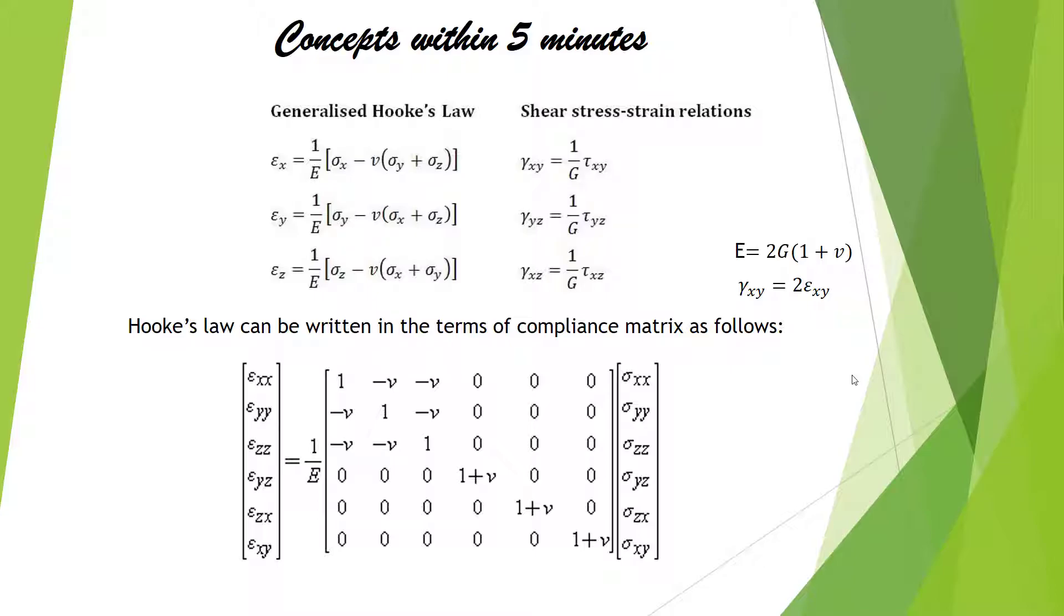Let's see the first set of equations. First we have got generalized Hooke's Law: epsilon x equals 1 by E, and so epsilon y equals 1 by E, and epsilon z equals 1 by E. These are the normal strains.